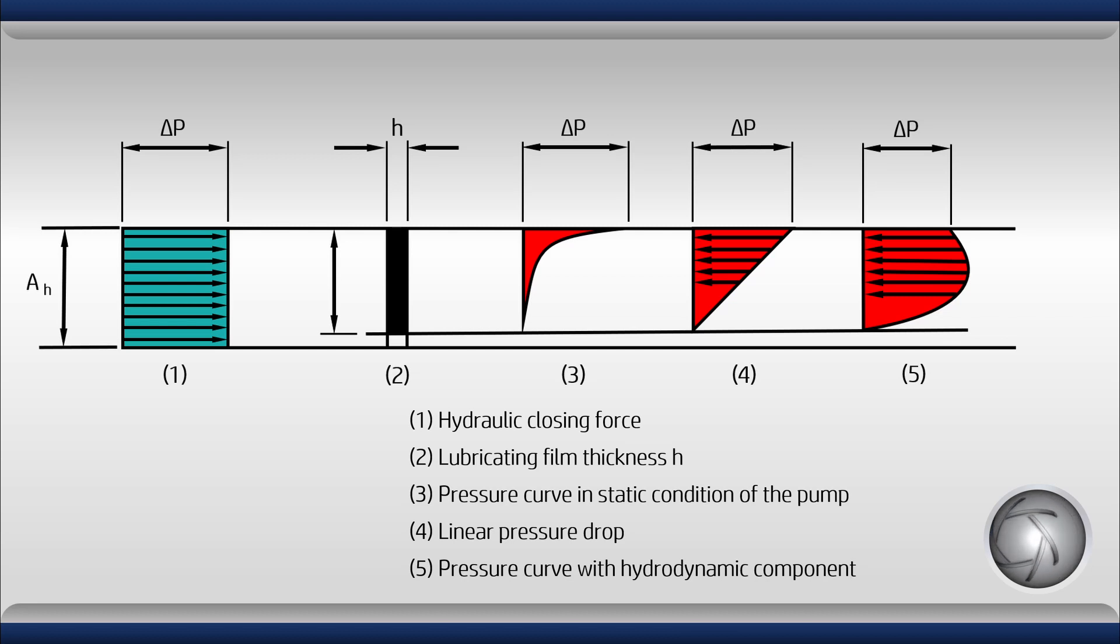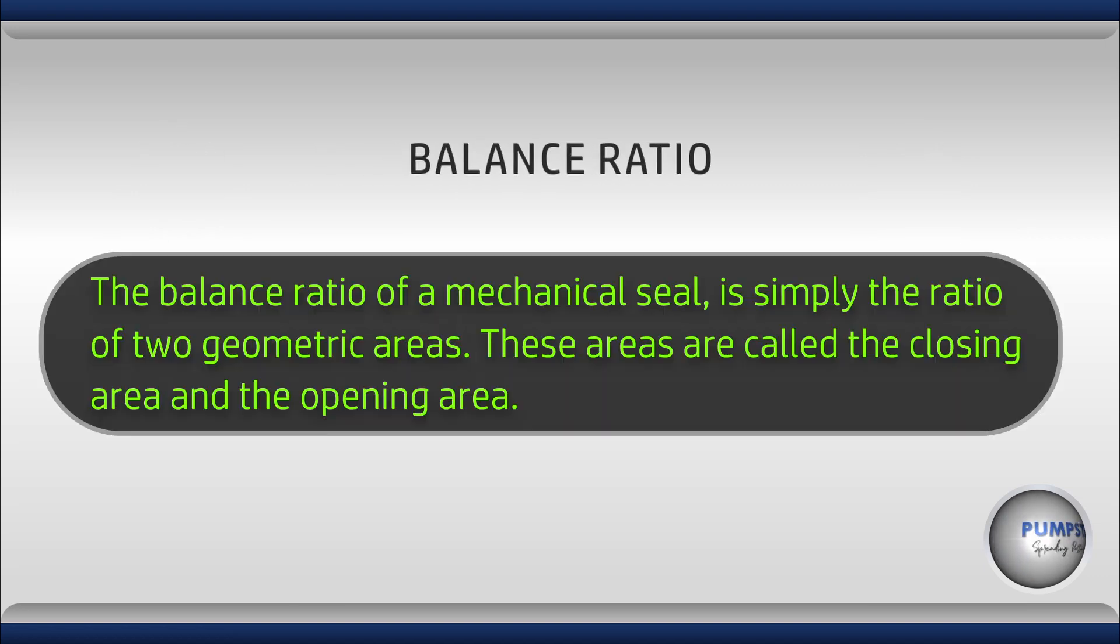This problem is solved by allowing the sealed pressure to act on a smaller area relative to the sliding surface area or in sealing terminology balancing the faces. The proportion of the hydraulically loaded surface area to the sliding surface area is an important design feature of a mechanical seal and is called the balance ratio. A proper balance ratio is critical to seal performance and stability in a specific application. The seal designer may calculate the balance ratio in different ways. It is sometimes expressed as a percentage.